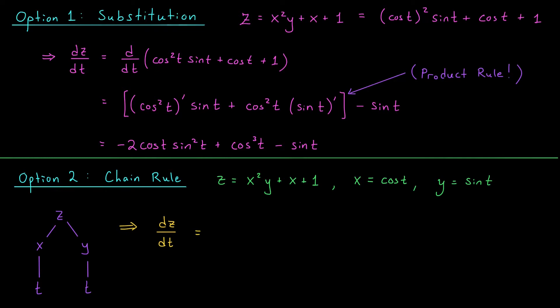There's another method that's usually a little slicker and often avoids lengthy derivative calculations. Instead of using substitution, we can apply the multivariable chain rule. Right now we have z as a function of x and y, and x and y as functions of t. We can represent these relationships using a dependence tree: z is at the top, x and y are intermediate variables at level 2, and t, the independent variable, is at the bottom. To calculate the derivative of z with respect to t, we follow the branches of this diagram — moving down, multiplying derivatives along a branch, and adding the results from separate branches.